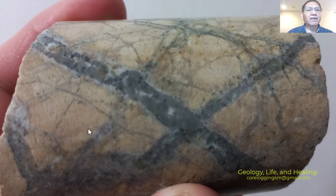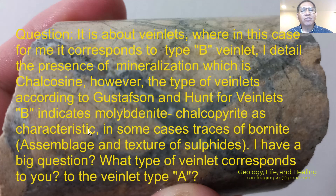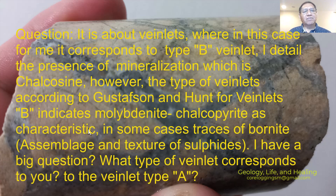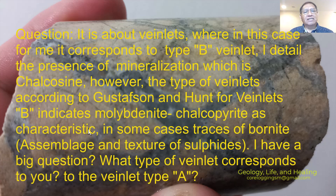The sample is there. The question says it's about veinlets, which in this case corresponds to a type B veinlet. I detailed the presence of mineralization of chalcocite; however, the type of veinlets according to Gustav Hant for veinlet B indicates molybdenite, chalcopyrite, accessorics, and in some cases a trace of bornite, and an assemblage of textures of sulfides.